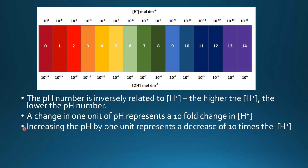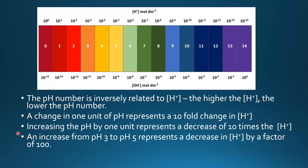Increasing the pH by one unit represents a decrease of 10 times the concentration of H⁺. For example, an increase from pH 3 to pH 5 represents a decrease in hydrogen ion concentration by a factor of 100.